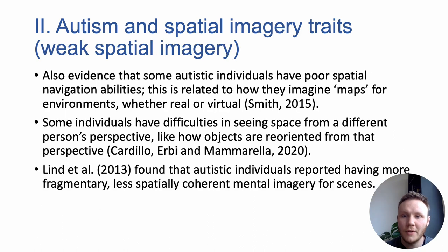Yet there is also evidence that some autistic individuals have poor spatial navigation abilities, with a diminished ability to generate maps for environments in virtual reality settings. There are also reported differences in spatial perspective taking in autism, wherein some autistic individuals have difficulties in seeing space from a different person's perspective.